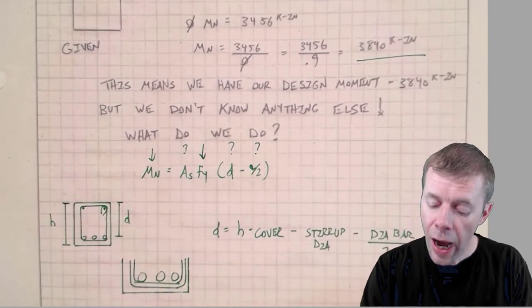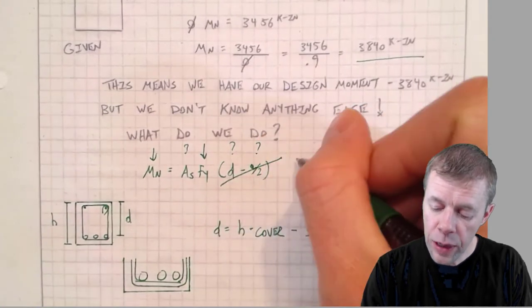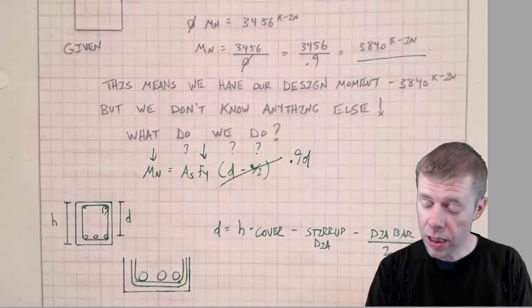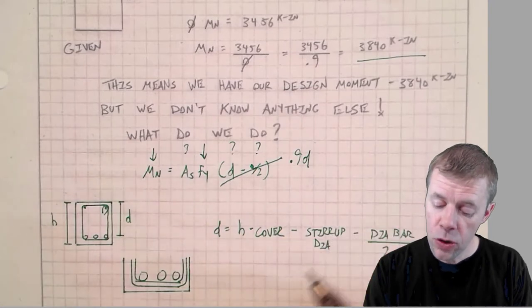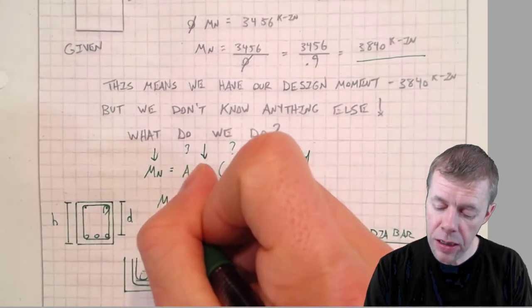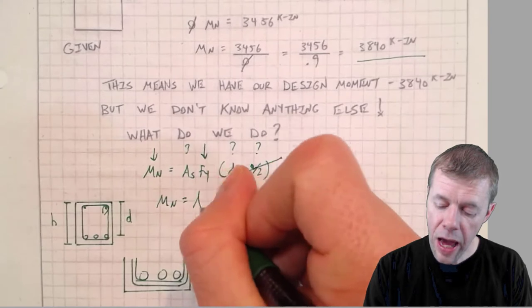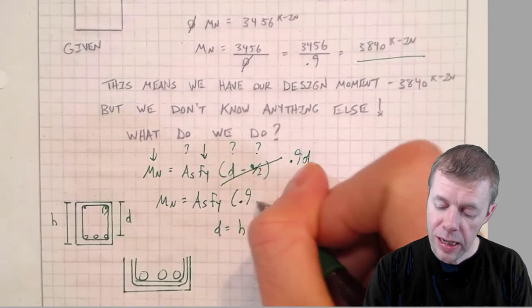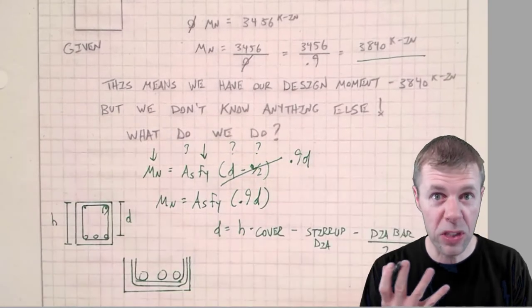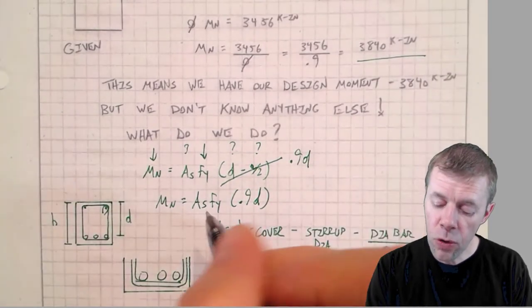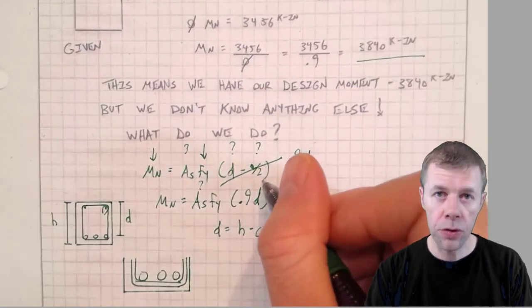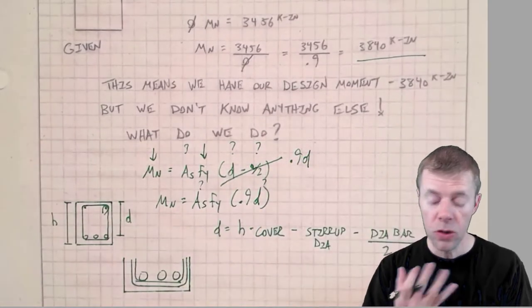If you remember from one of my other videos, we can simplify this equation. I can just assume that this is equal to 0.9D. Now I have to check it, but I assume it is. So when I do that I'll have Mn equals As Fy times 0.9D. This is better. Now I only have two things I don't know.